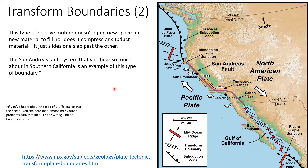You may have heard of the San Andreas Fault out in California, which is the really active one. Most of the earthquakes that we hear about on the news occur on the San Andreas Fault, and it is a transform-type fault boundary — the Pacific plate moving northwest relative to the North American plate.